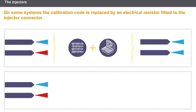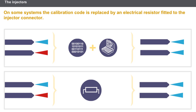On some systems, the calibration code is replaced by an electrical resistor fitted to the injector connector. The computer reads the value of the resistance and applies the correction during the injection phase. This avoids having to carry out the after-sales programming procedure using the diagnostic tool and allows the injectors to be switched.